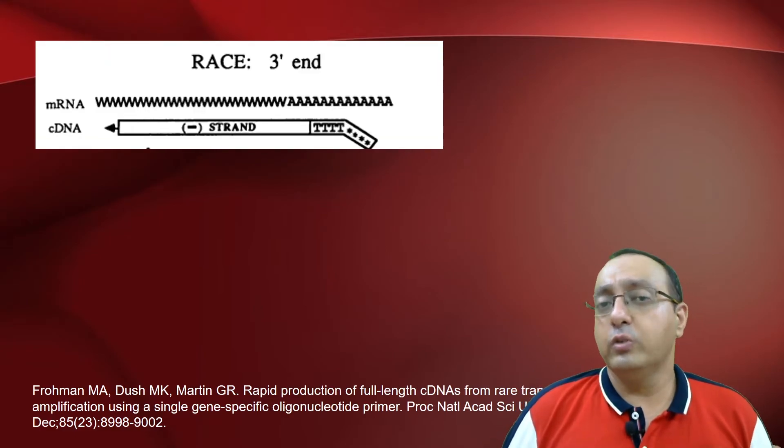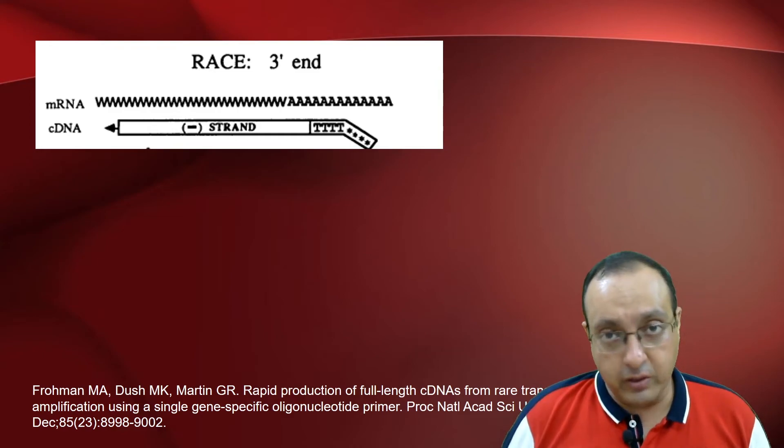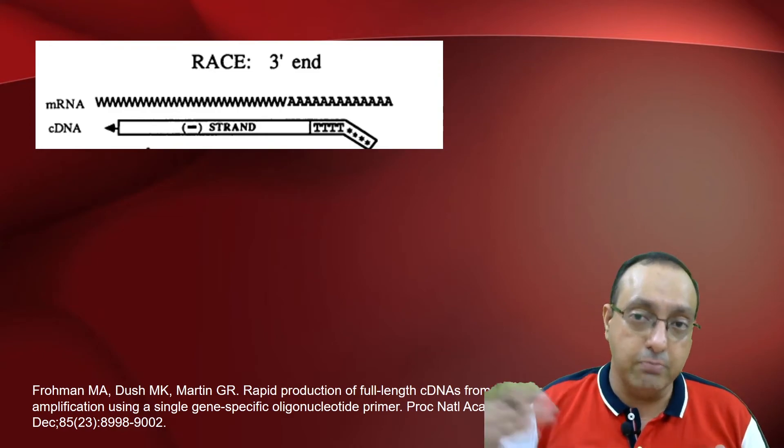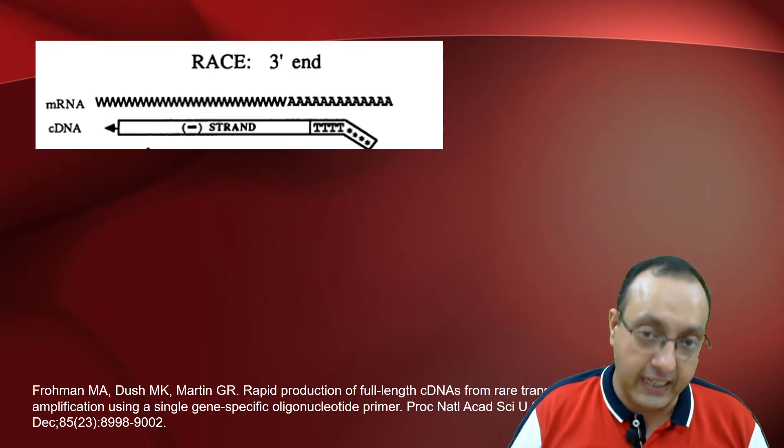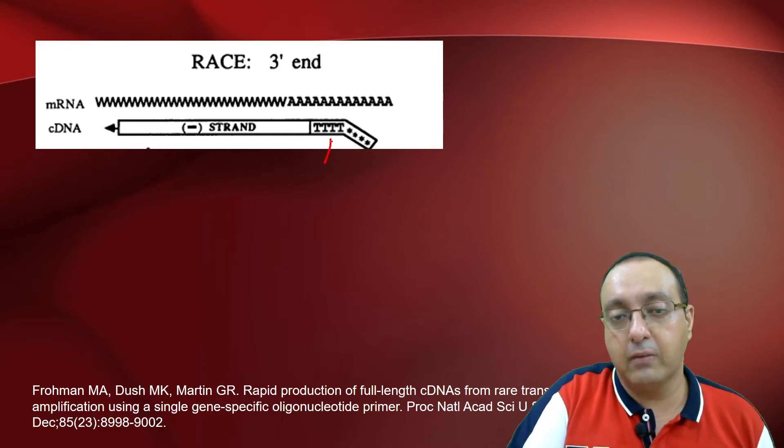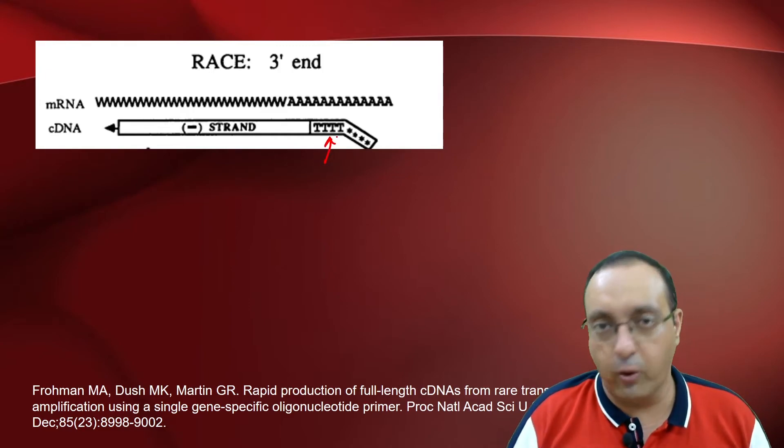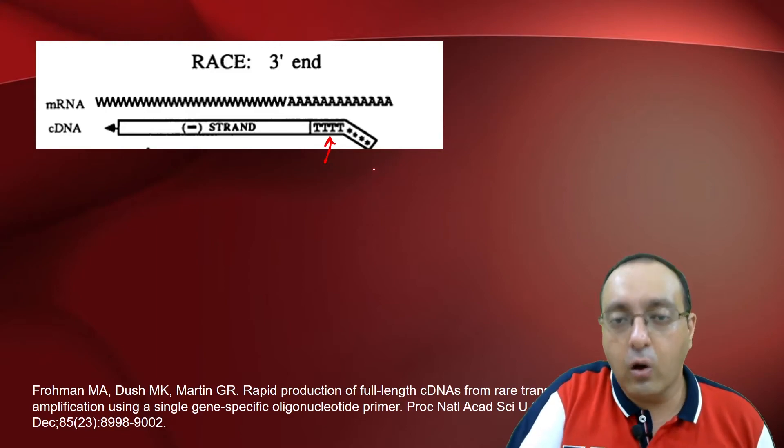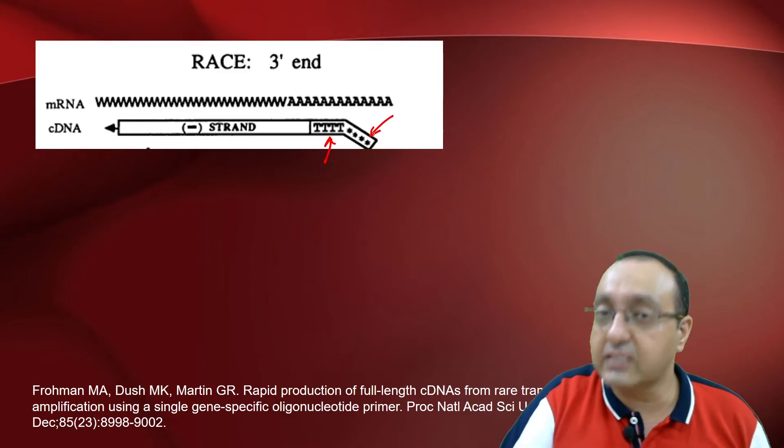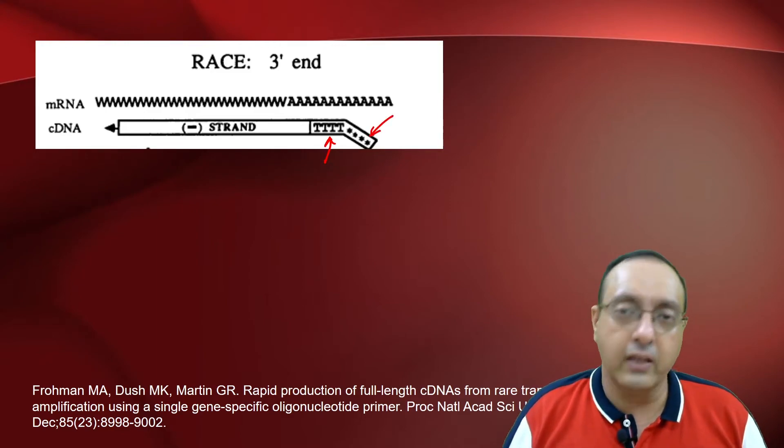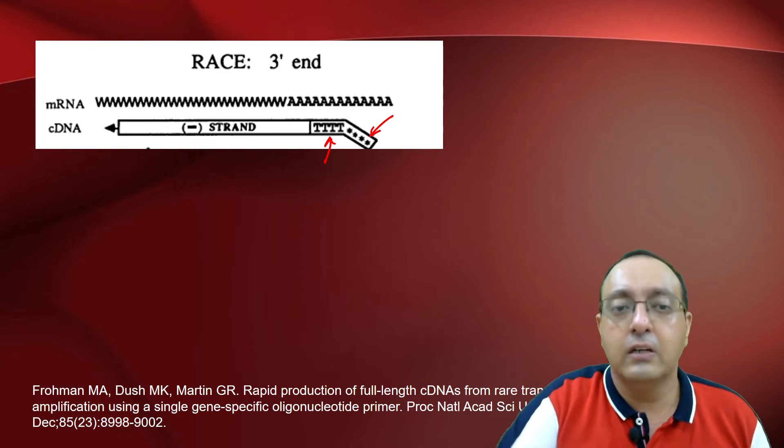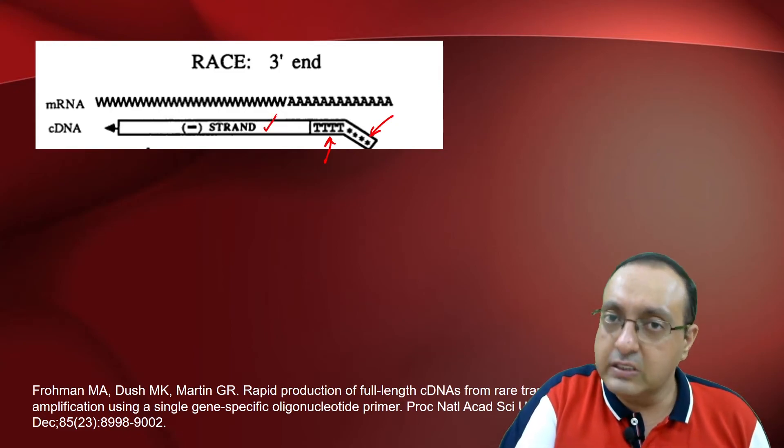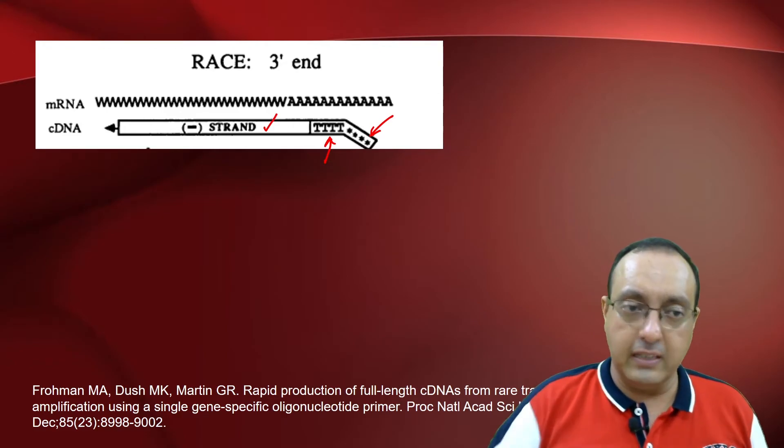Now what we want to do is we want to map the 3' end of the RNA. So here we will be staying close to the poly-A tail and we will design our primer in a very convenient way. You can use a poly-T primer along with again those rare restriction sites which can help in our cloning and Southern blotting later on. It will synthesize the negative strand of the cDNA using reverse transcriptase.